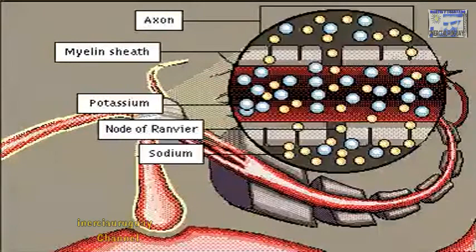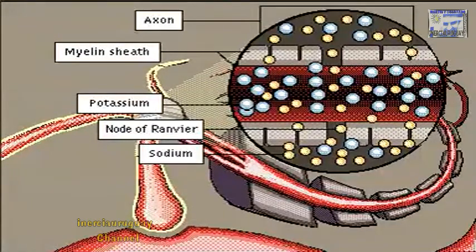When a neuron is at rest, the axon maintains a chemical balance in the neuron by keeping more potassium ions inside the cell and more sodium ions outside.